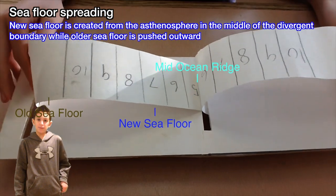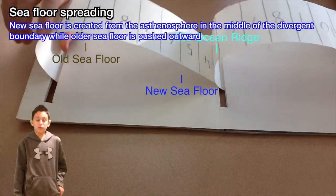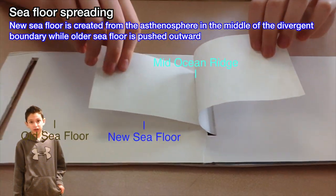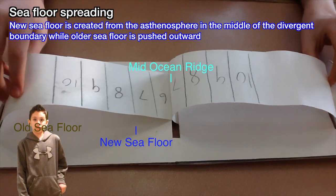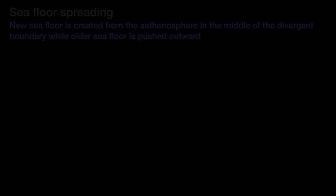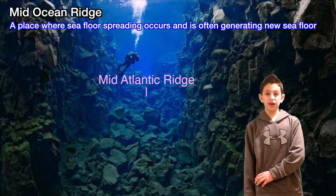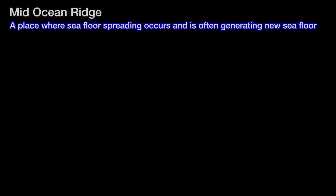When this happens, in the middle of the divergent boundary, magma will rise from the asthenosphere, creating new ocean seafloor. As other seafloor gets pushed outward, it becomes older seafloor. Seafloor spreading occurs in a mid-ocean ridge, such as the Mid-Atlantic Ridge.